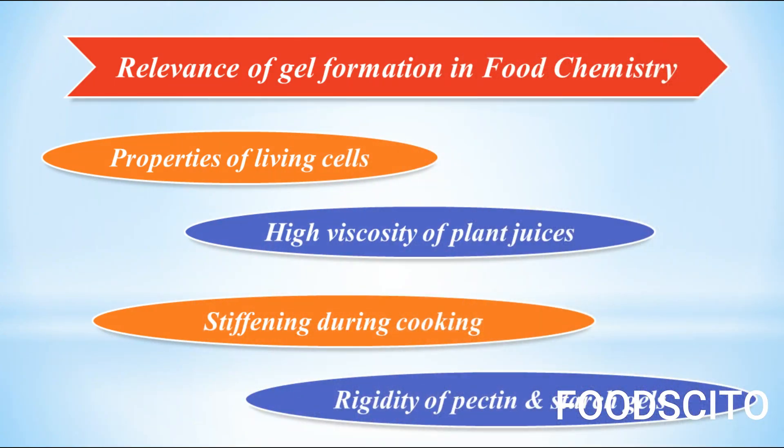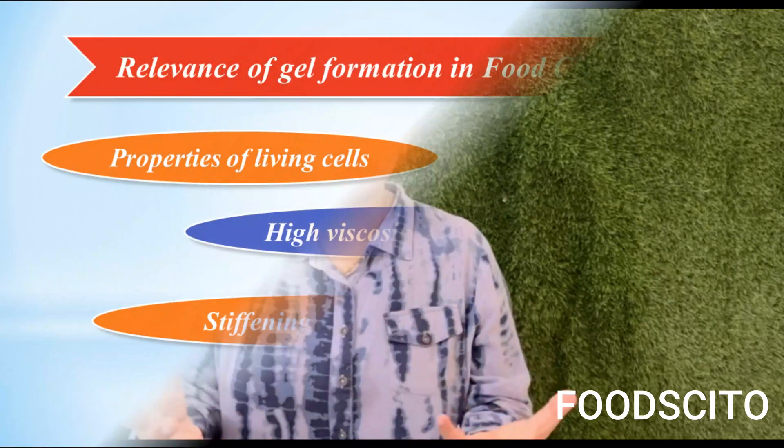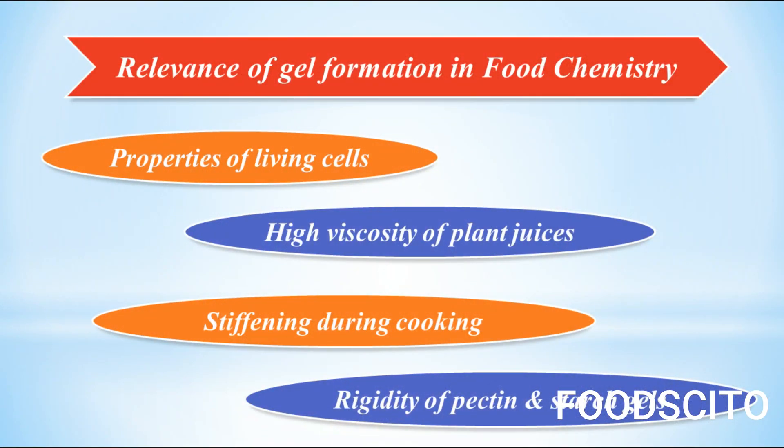But it also critically affects food processing. Here I would like to quote a few examples: high viscosity of plant juices, rigidity of pectin and starch gels, or stiffening during cooking — for example, when we are cooking meat, flour, or egg, there are certain changes in structure. All these food processing operations and many more are associated with formation of gel.